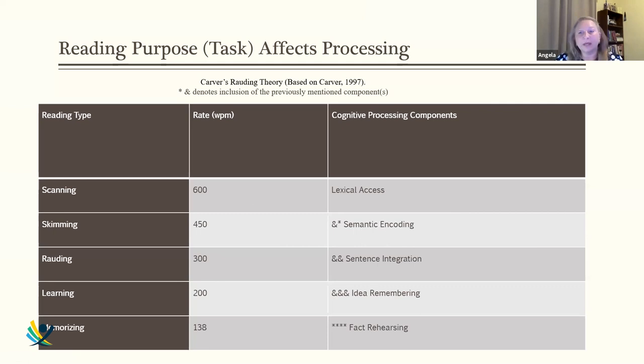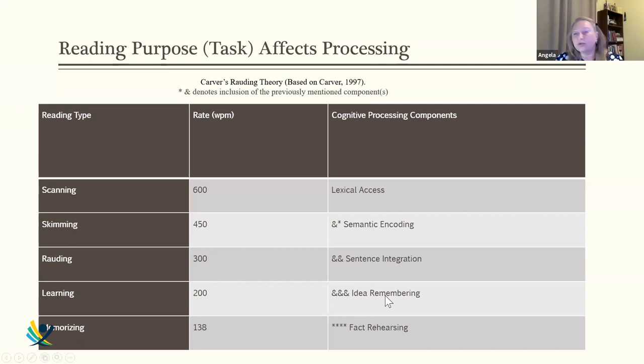Learning is the most common type in school — you're expected to read a text and discuss it weeks later, articulating it in your own words rather than just reciting verbatim. This involves remembering ideas, at about 200 words per minute in your first language. Memorizing is a different, very slow process focused on remembering specific words. You can actually memorize a text and have no idea what it says — memorizing involves looking at words and rehearsing facts, not comprehension.